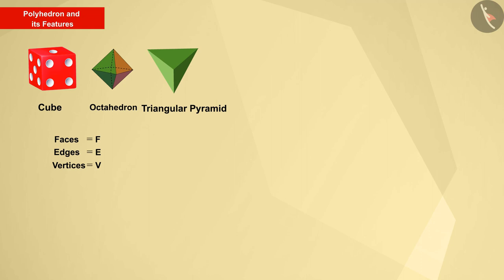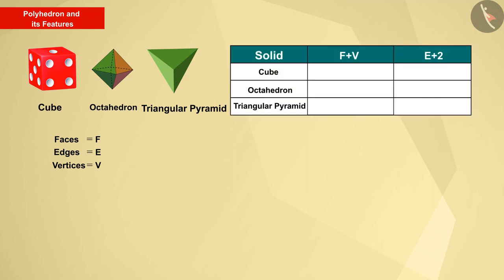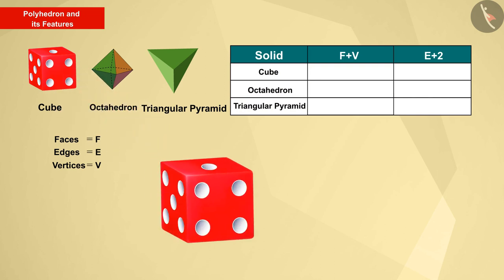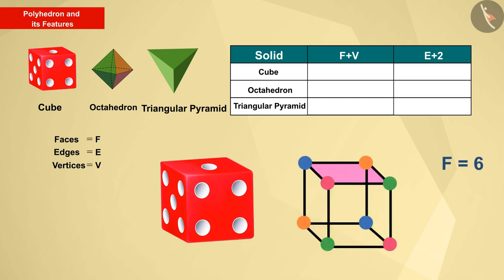We start with the cube. As we can see, the cube has six faces, 12 edges and eight vertices. The sum of F and V is 14 and the sum of the edges and 2 is also 14.